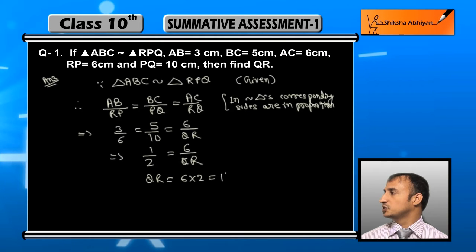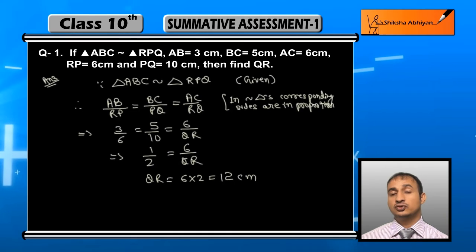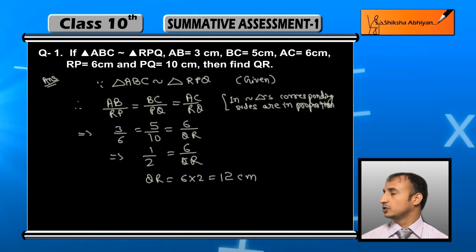5 upon 10 half, 3 upon 6 भी half है, तो यहां QR की कितनी हो गए, 6 into 2 यानि के 12 cm.